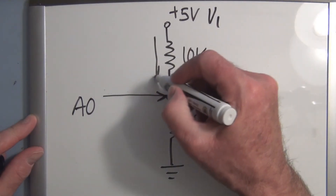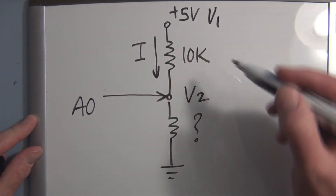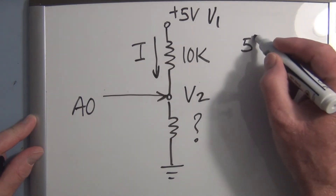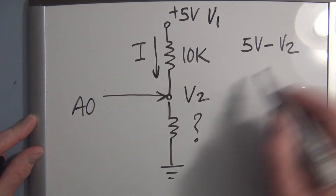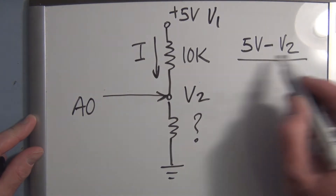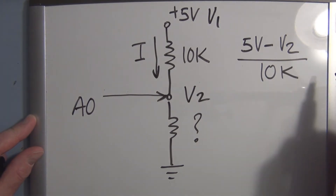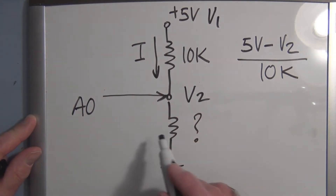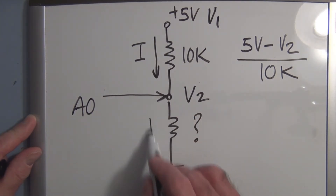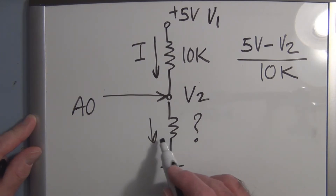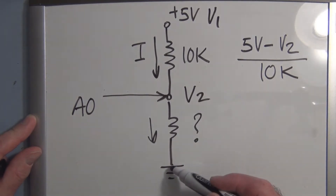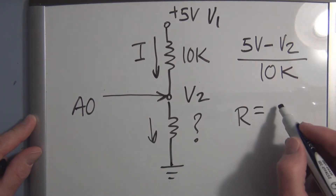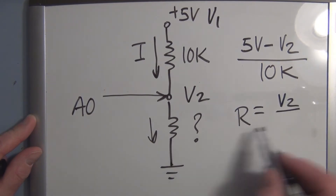To determine the current, all we have to know is the voltage drop across the 10k resistor. It'll be five volts minus V2, divided by 10k, and that gives us the current I. Because this is a series circuit, this current will also flow through the unknown. Once we know the current and the voltage drop across the unknown resistor — which will be V2 — R equals V2 divided by I.